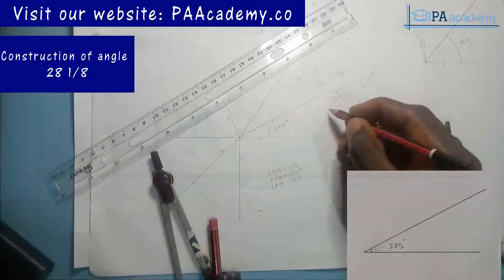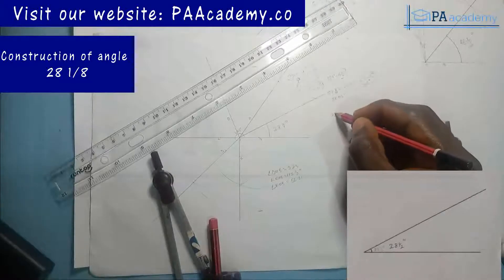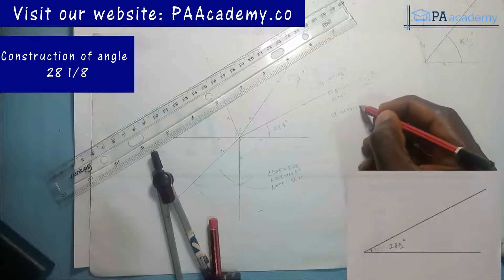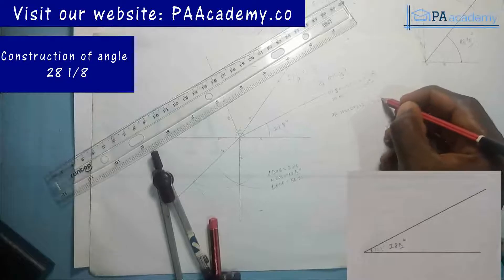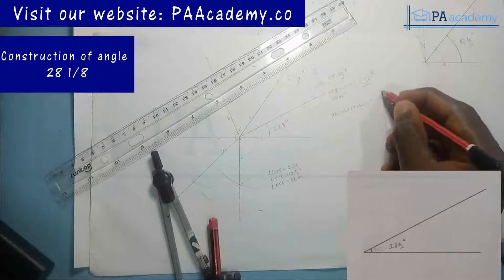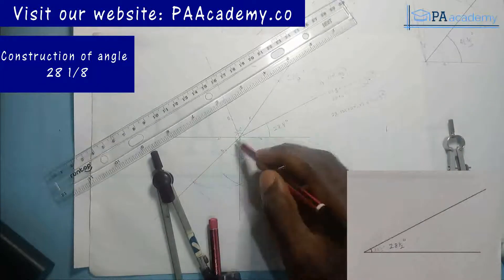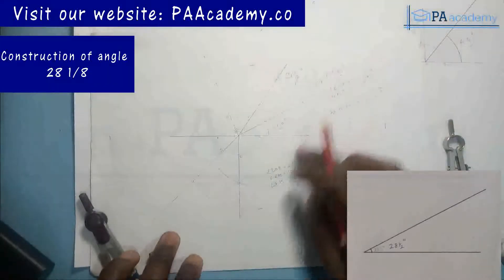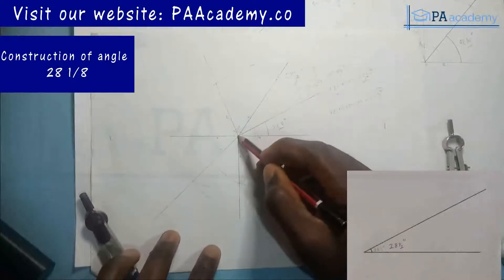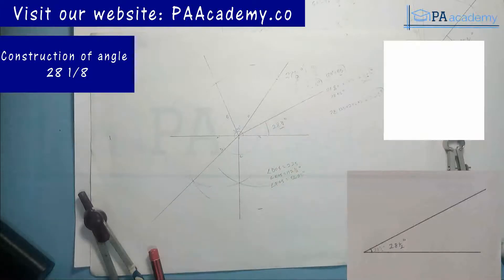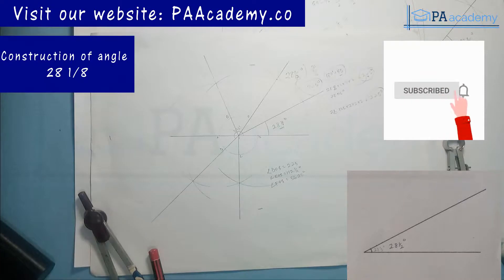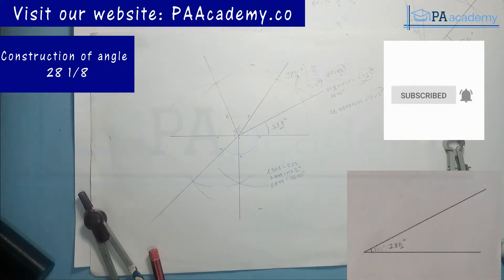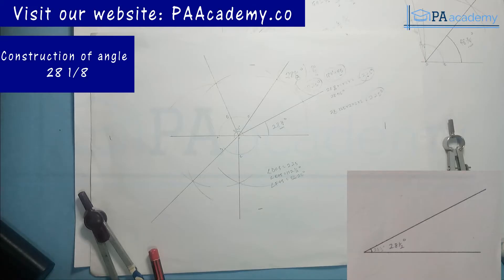So if you have 28.125°, multiply it by 2, times 2, times 2 to get 225°. Getting 225° is easy — go to the third quadrant, get your 45°, then bisect three times to get angle 28 and 1/8. Make sure when constructing, all lines are faint — only the lines showing the angles should be visible. If you want to know how to construct other angles like 3½°, 78¾°, or 37½°, check the playlist on technical drawing. Leave any questions in the comments, subscribe to PA Academy, check our website paacademy.co, and I'll see you in another video.